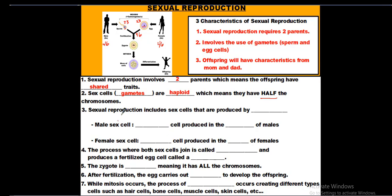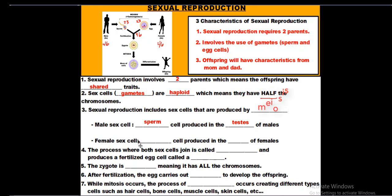Sexual reproduction includes sex cells produced by the male — the sperm cell — produced in an organ called the testicles or testes. The sperm cell has a flagellum, or tail, attached to it to help it swim through the female reproductive tract to find the egg. The female sex cell is the egg cell, produced by the ovaries, which are reproductive structures found outside the fallopian tubes.